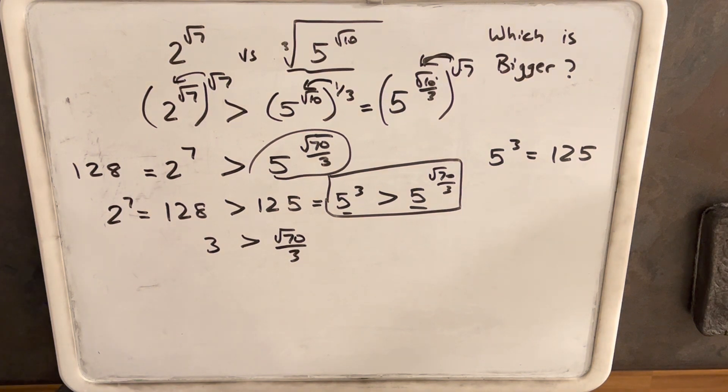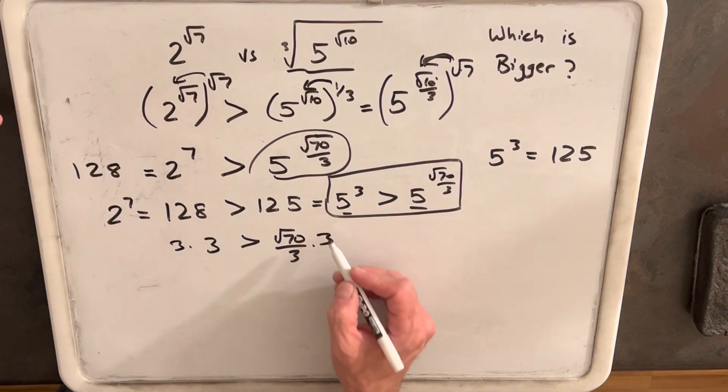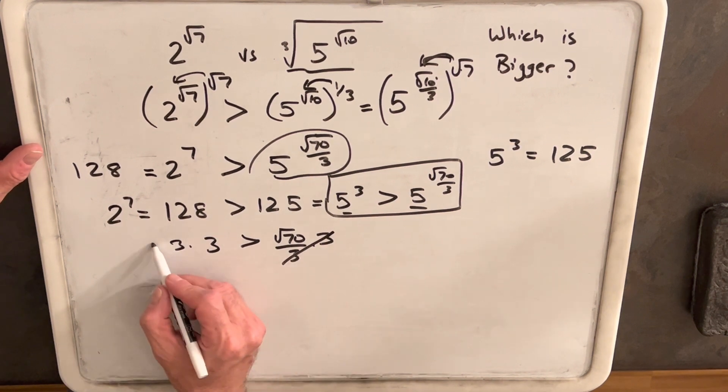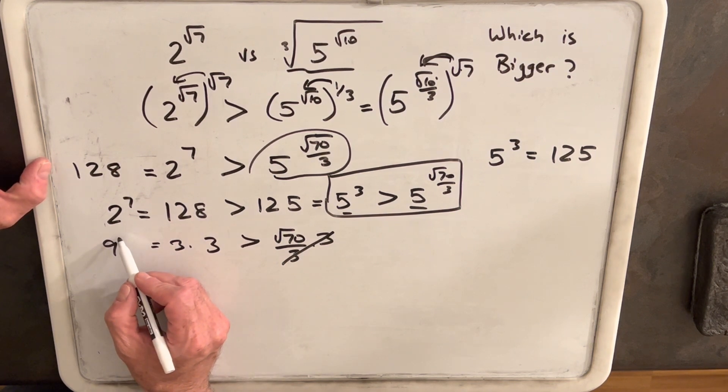And there's a few ways to do this. What we can do is we can multiply both sides by 3, just to get this to cancel. And then we have, we're comparing 9 to the square root of 70. And now if we square both sides,